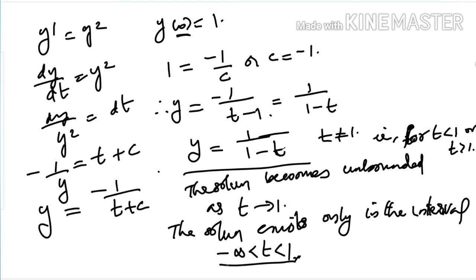The solution is only defined for −∞ < t < 1. This means there is no relationship between the functions in the hypothesis of the theorem — f and ∂f/∂y — and the interval of definition of the solution of the IVP.